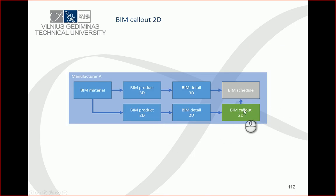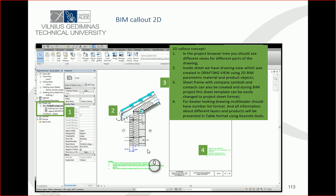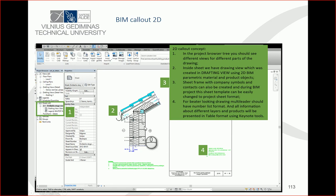BIM callouts 2D — these are connections. In connections you should also use BIM parametric objects. Many manufacturers simply take AutoCAD drawings, copy them inside a Revit family, and claim they created a BIM 2D object. That is not the right way. The correct approach is that each component should be a separate parametric object, like real materials, which you can combine and join separately in each project.